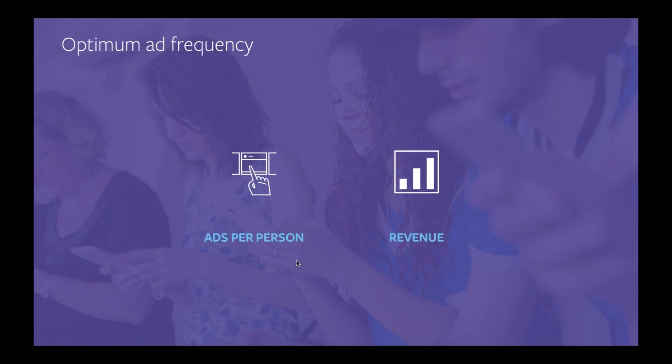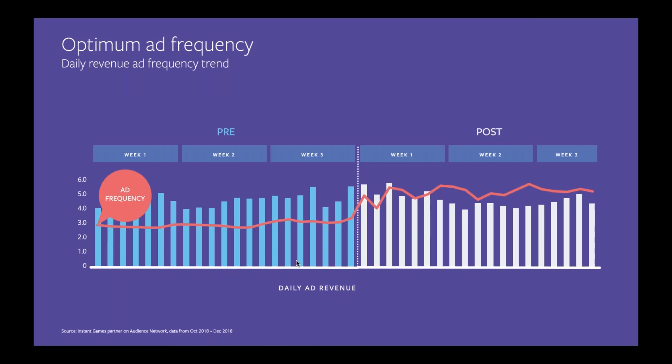The next best practice is around optimizing your ad frequency — the number of times each user sees an ad in a day. You need to review the relationship between the number of ads a user sees and the amount of revenue generated. There's a point where more ads don't necessarily generate more revenue and could even lead to churn. Here's a case study from a developer using Audience Network through instant games: they tested increasing ad frequency per user per day from about three ads to about five ads, but the revenue did not increase proportionately. So make sure you find the right balance to provide the best user experience.